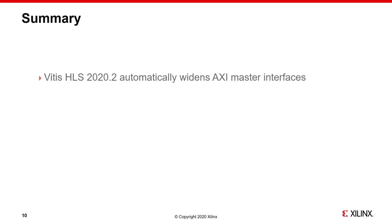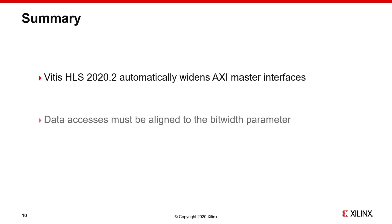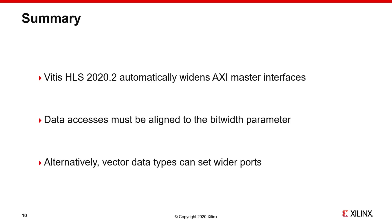In summary, the new version of Vitis HLS automatically widens the AXI master data width if accesses are aligned to the value set for the bit width parameter. Alternatively, vector data types, which are also supported in Vitis HLS, help specify port width in a more direct manner. Thanks for following this video. Goodbye, and have a great rest of your day.